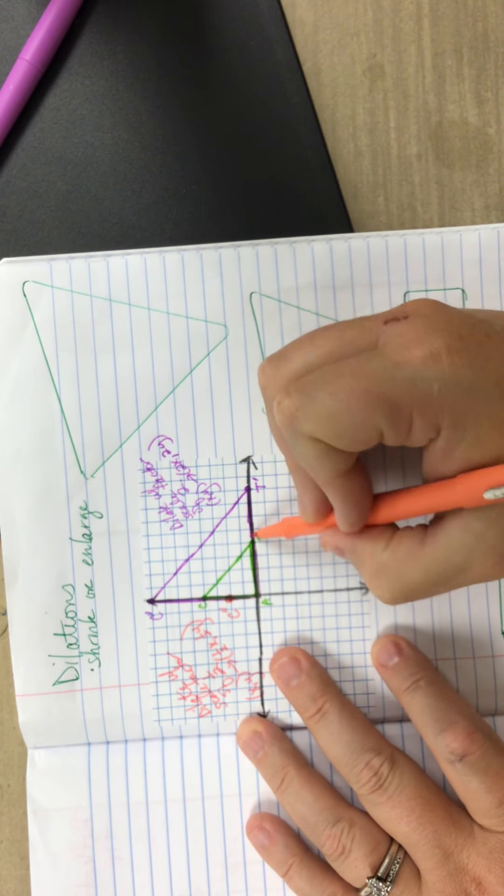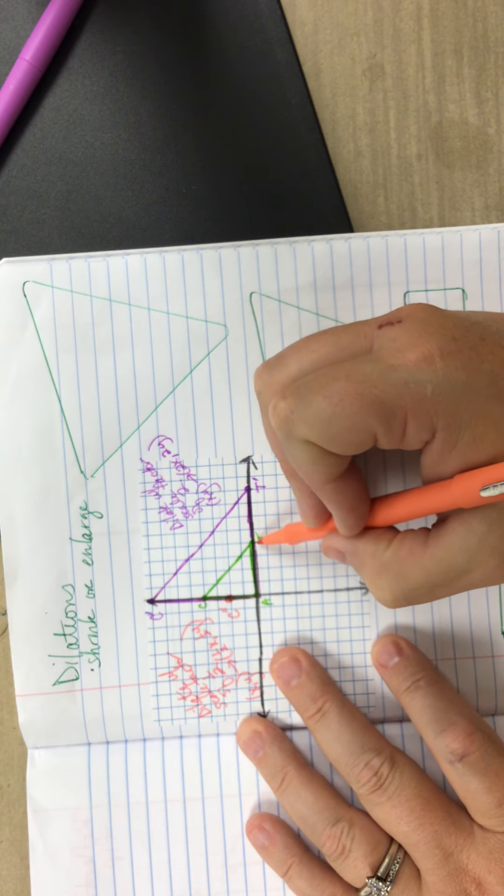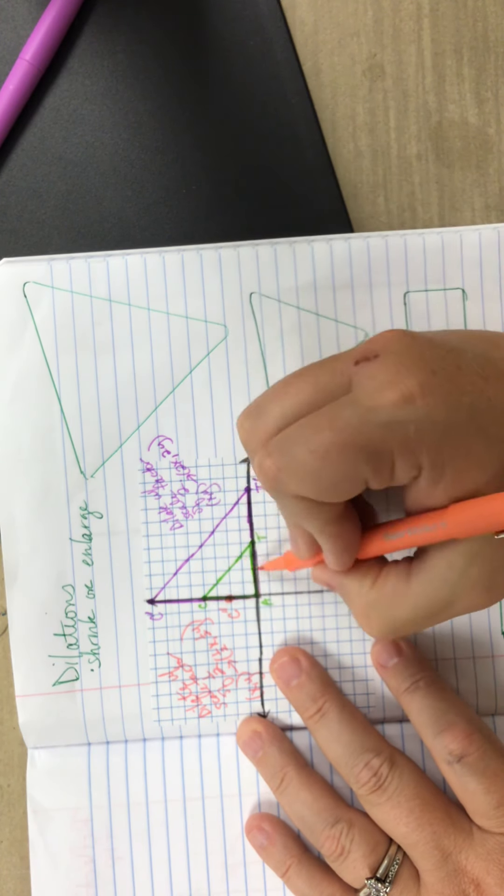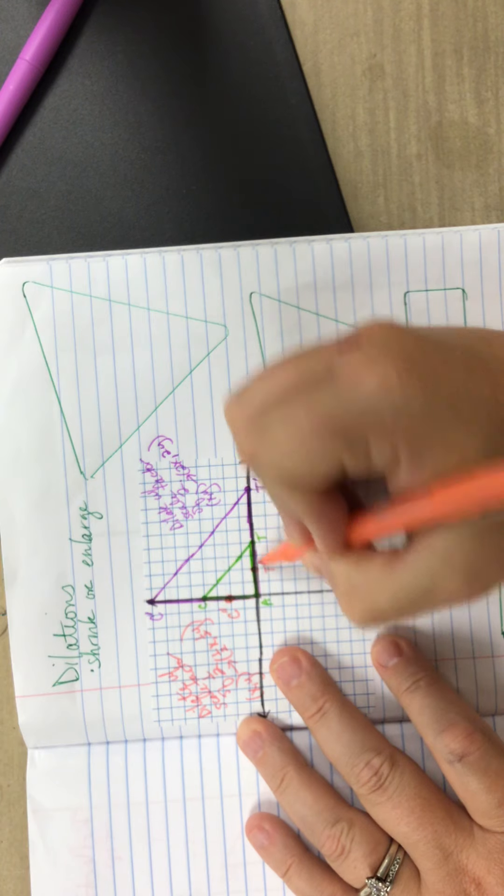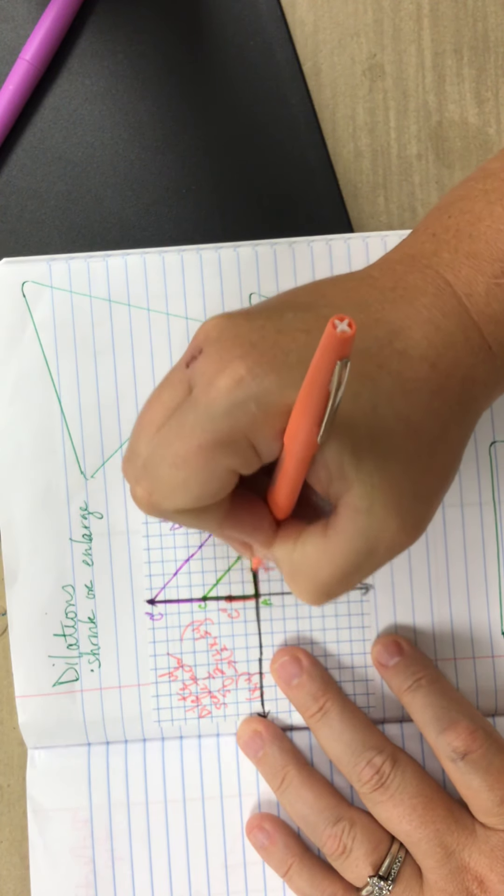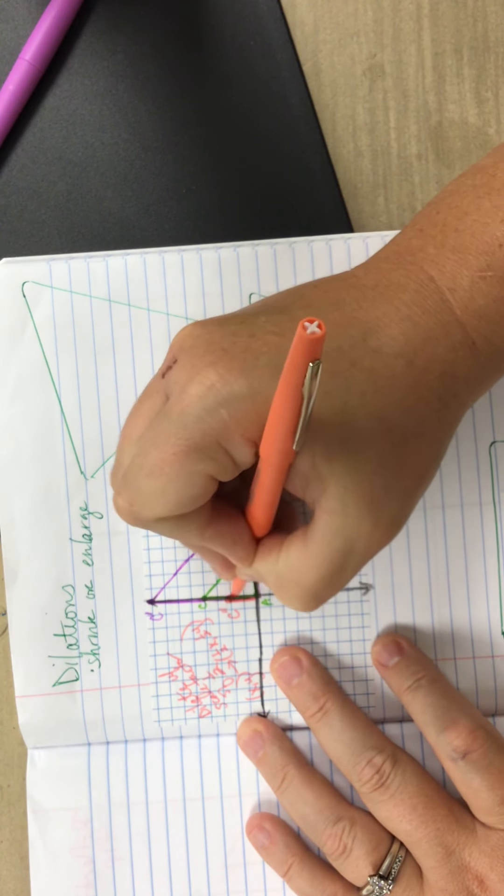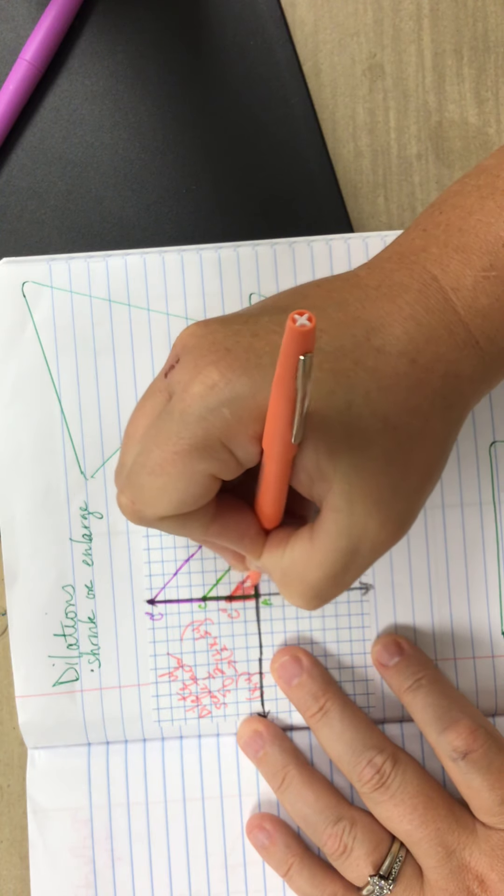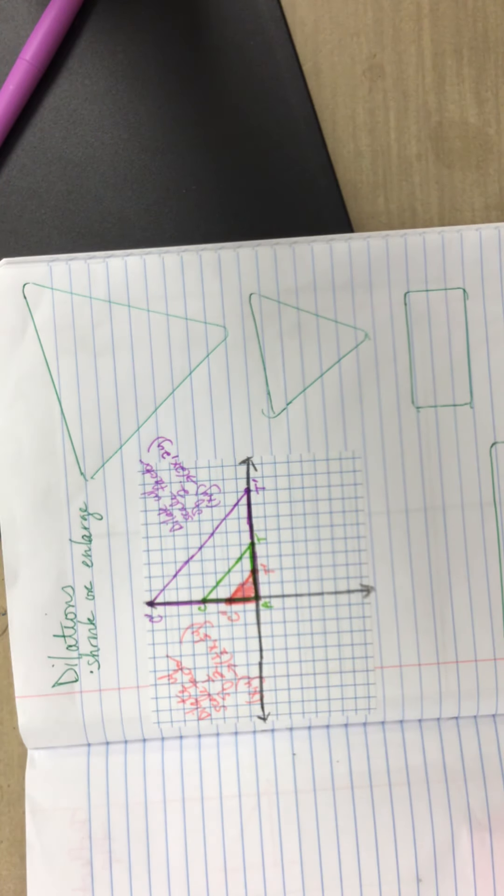And then for T, it was at 4, 0. So now it's going to be, what's half of 4? Again, 2. So now it's going to be here at 2, 0. So in this orangish color, this is my new triangle. So notice, it's again, half the size of my original green triangle.